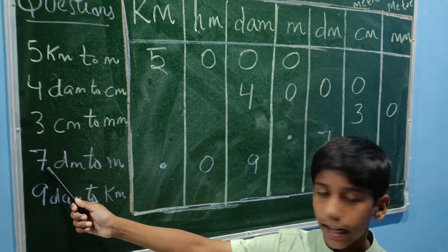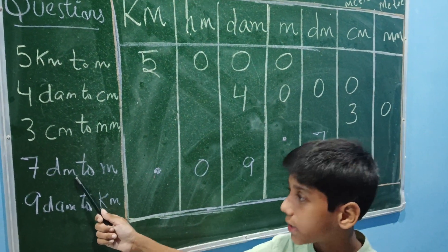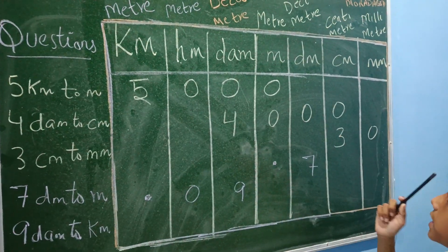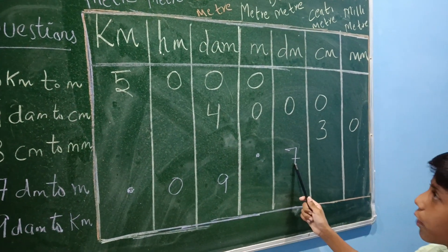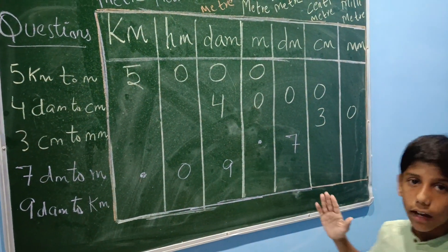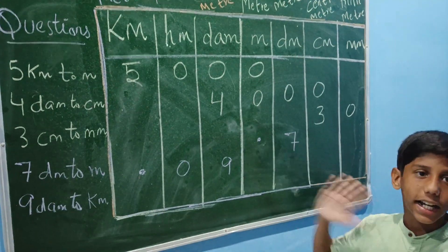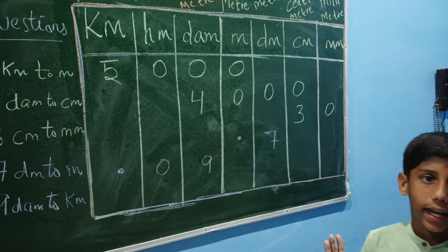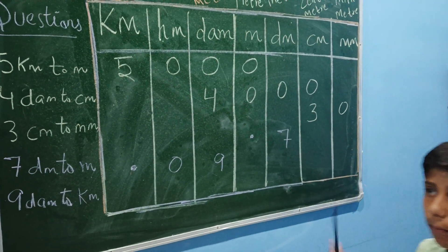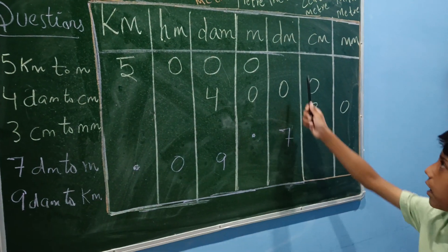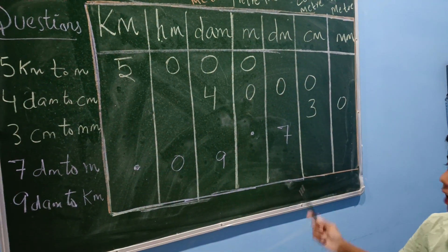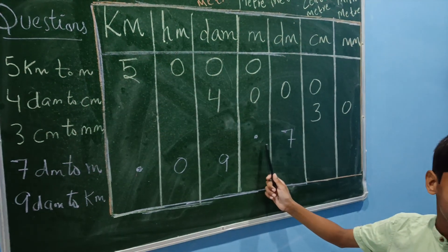Now next: 7 decimeter to meter. Now we have to convert 7 decimeter to meter. When we move from a smaller unit to a larger unit, checking the left side, we divide by 10. So we will write 7 decimeter to meter and check the left side.